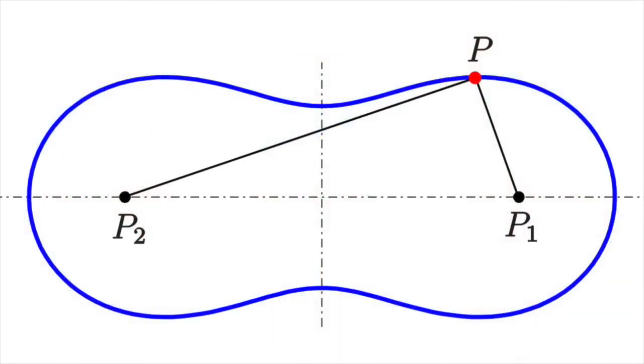Equivalently, Cassini ovals are a family of curves, each member of which is defined as follows. Given two points, p1 and p2, and a constant b squared, each curve is the locus of points p.